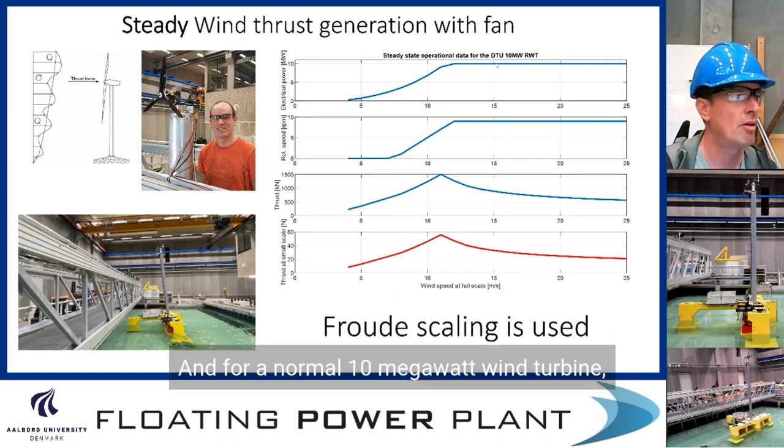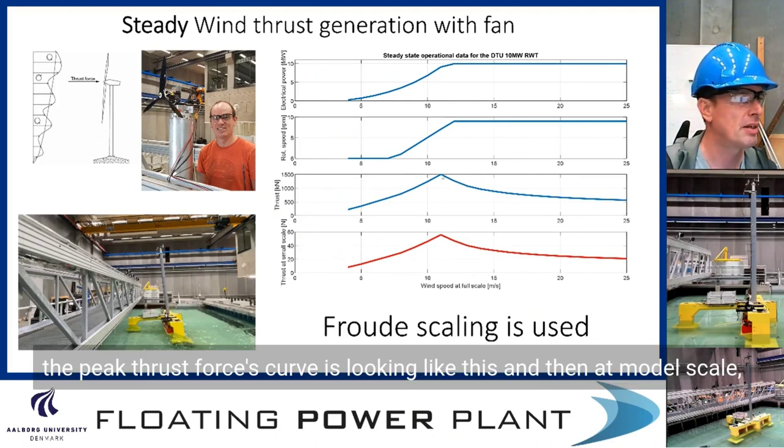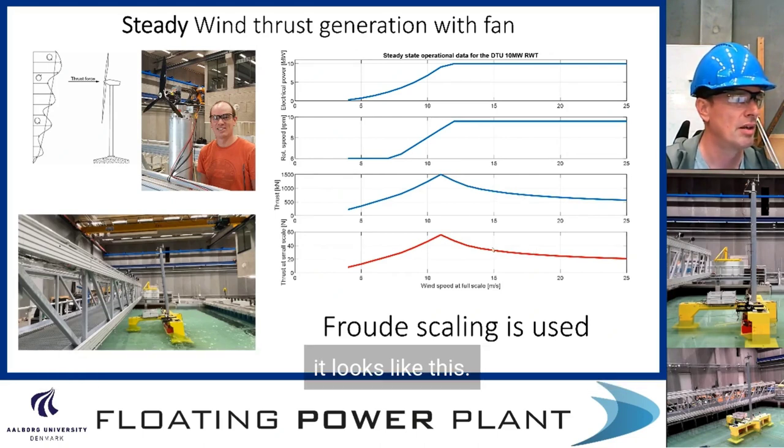For a normal 10 megawatt wind turbine the peak thrust force curve is looking like this and then at model scale it looks like this.